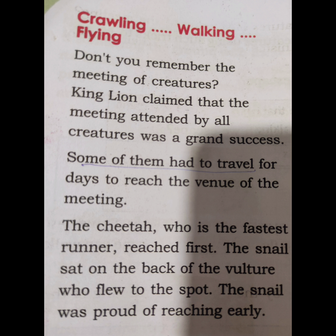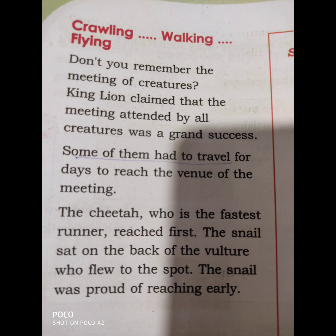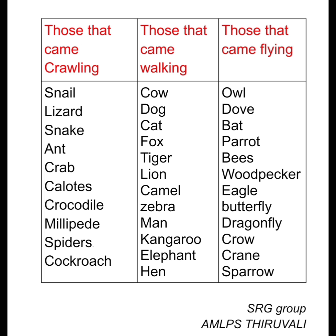Animals can be divided on the basis of locomotion. Can you remember the meeting of the forest conducted by the lion? Animals came crawling, some of them came walking, some of them came flying. Why do animals come to the crowd?